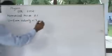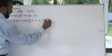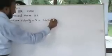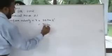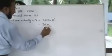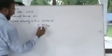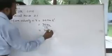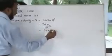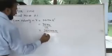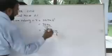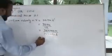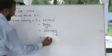Given that V equals 36 km per hour. This can be written as 36 km over 1 hour, which equals 36 into 1000 meters. One hour can be written as 1 into 60 into 60 seconds, which equals 10 meters per second.